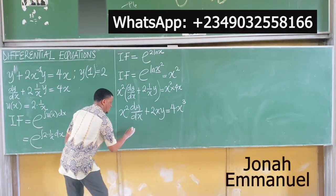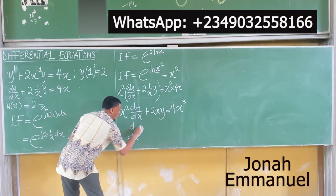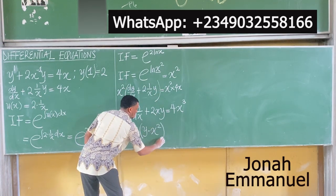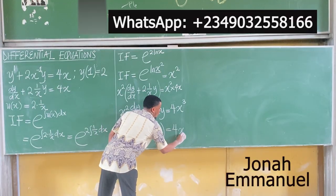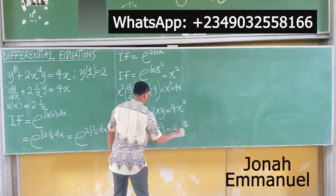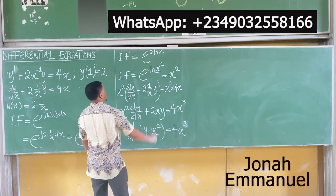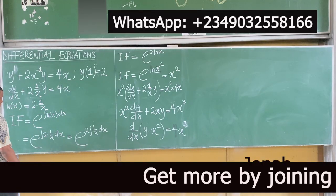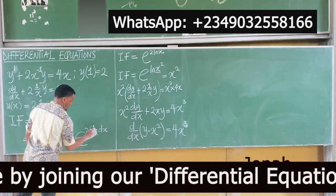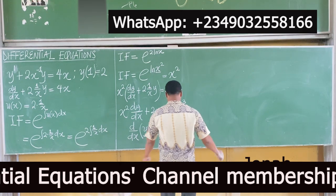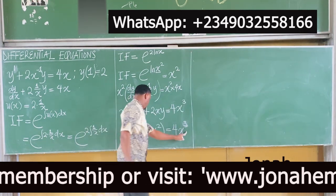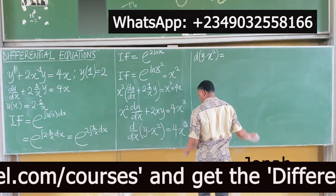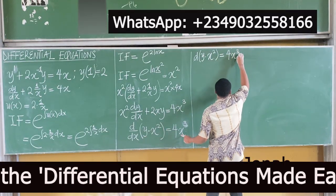This entire left-hand side is the derivative d/dx of (y times the integrating factor x²). So we can write: d/dx(y·x²) = 4x³.